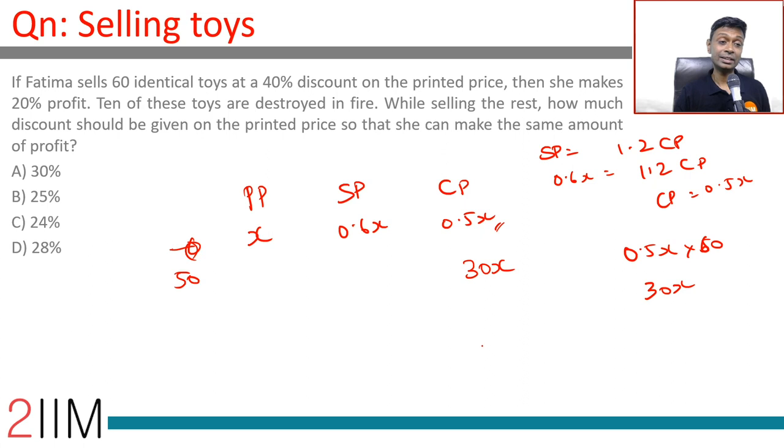She needs to make a 20% profit, so from 30x she has to realize 36x.